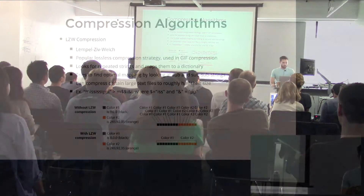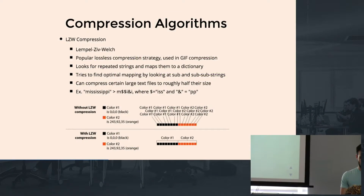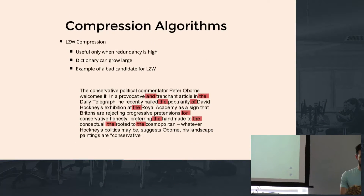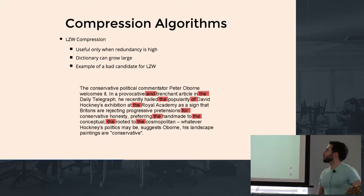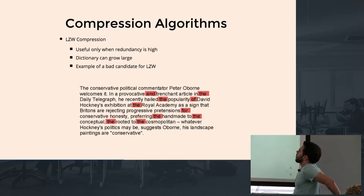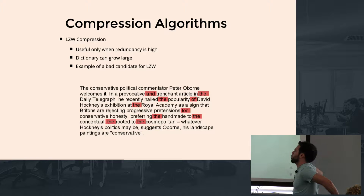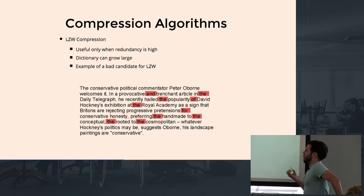The problem with this algorithm is that it doesn't work great for human language, where it's harder to predict patterns and there aren't as many repeating elements. The dictionary ends up growing really large because there's just not that much to condense. So you need other strategies for things like natural language text.